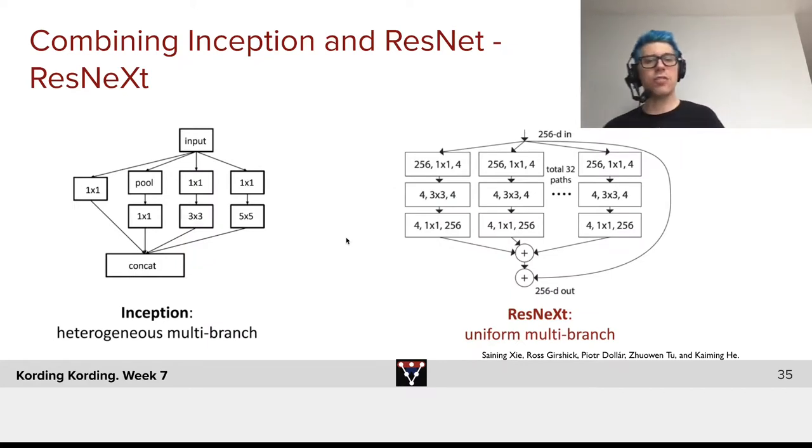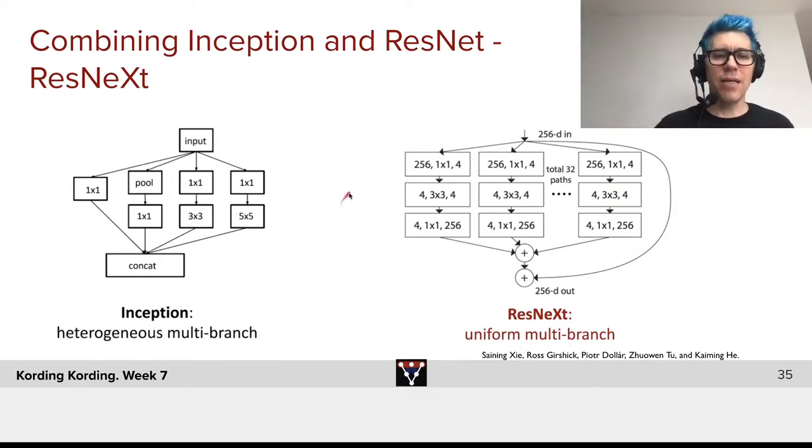A next innovation here is ResNext, where you could take that same basic idea that we have in ResNet, and we can basically have multiple channels in parallel that have uniform multi-branch structure, and in some cases, it really helps.